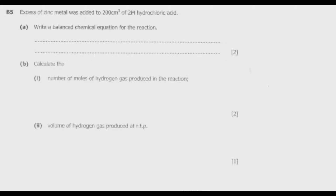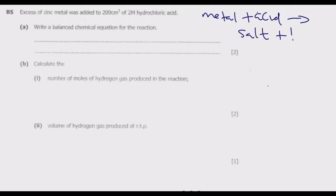Question A: Write a balanced chemical equation for the reaction. We are reacting zinc metal with hydrochloric acid. The generic formula is: when you react a metal with an acid you end up with a salt and hydrogen gas.